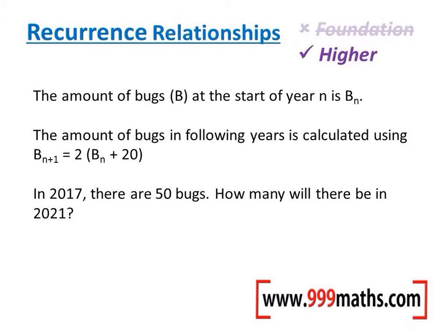This skill looks a lot harder than it actually is. It just involves you putting a number into a formula to generate the next term, and the next term, and so on. In this question, the amount of bugs at the start of year N is given by this fancy notation B_N, and the amount of bugs in the following year is calculated using this formula, which basically means that the next year equals 2 lots of the previous year add 20. So this notation means the next year, and this one here is the previous year or the current year.